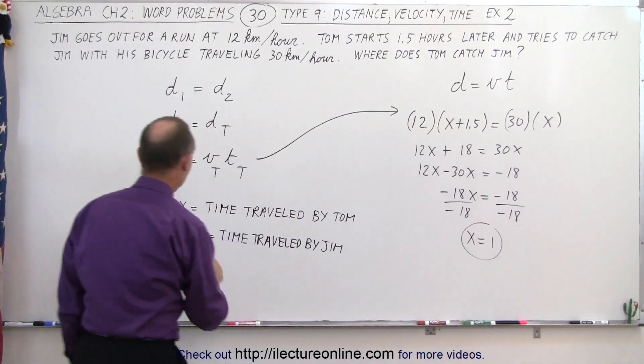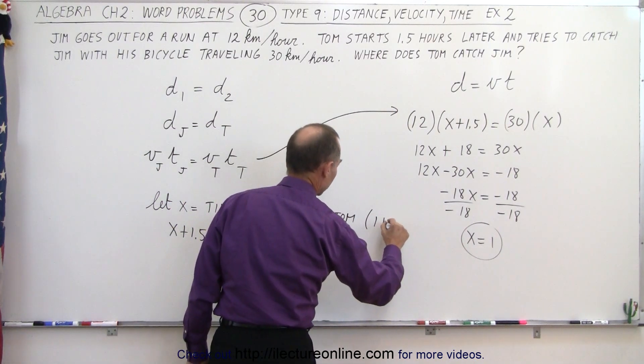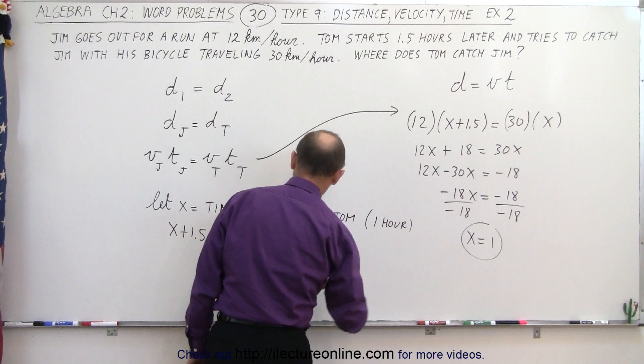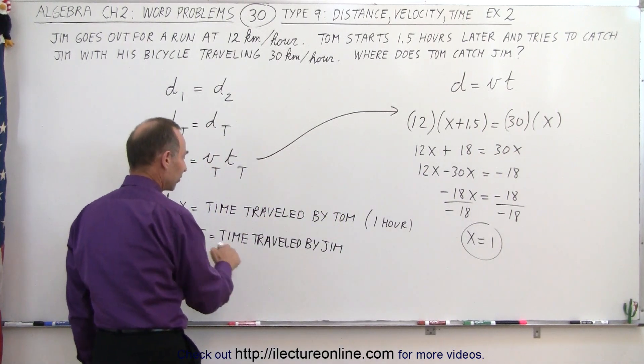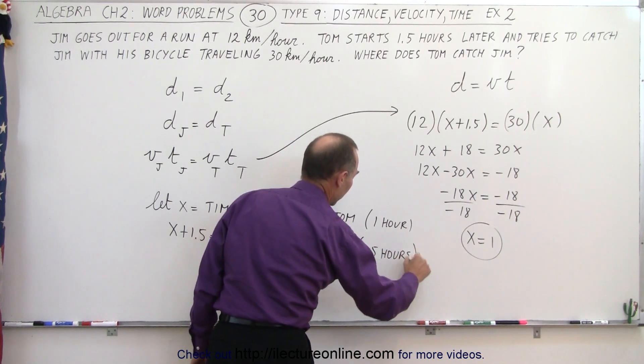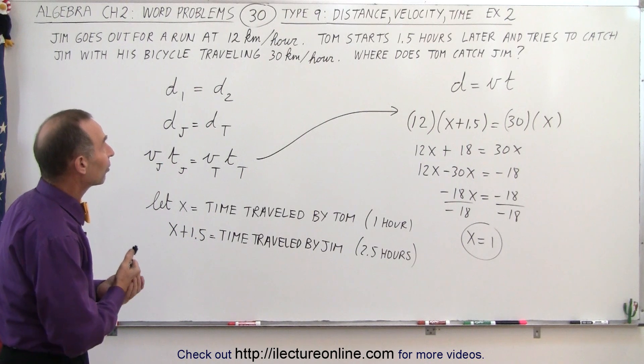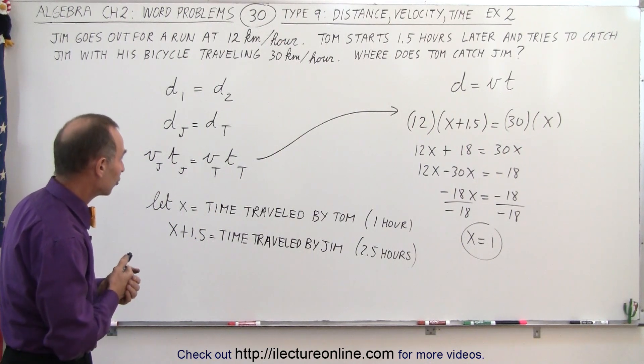Now we go back over here, and x is the time traveled by Tom, so that would be 1 hour. And x plus 1.5 is the time traveled by Jim, which is 2.5 hours. So now we know how long it took for them to travel, and where did Tom catch Jim?